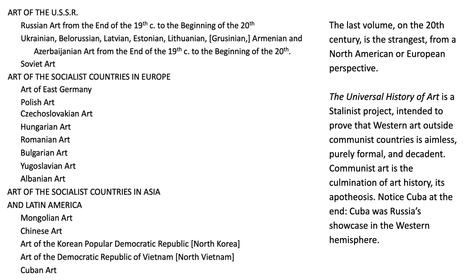This Universal History of Art is a Stalinist project intended to demonstrate that Western art outside of communist countries is aimless, lost its way, purely formal — without real spirit or content — and decadent. Communist art is presented as the culmination and apotheosis of art history. You can see headings for art of the USSR, art of the socialist countries in Europe, and art of the socialist countries in Asia and Latin America — categories that would never appear in textbooks written outside Soviet influence.